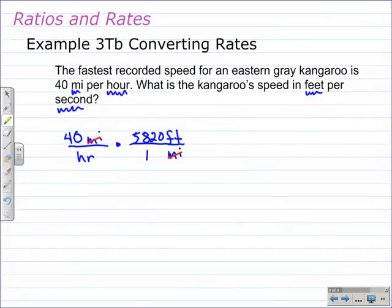Now the conversion factor for that is 5,280 feet in one mile. So I got my miles converted into feet, so now I need to change my hours into seconds. That's going to take two steps to change hours into seconds. First I've got to change hours into minutes, and then minutes into seconds. So I want to change the hours. Now hours is in the denominator here, so I have to write it in the numerator, and I've got to change that to minutes.